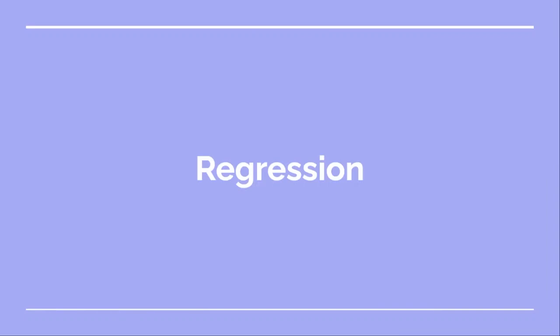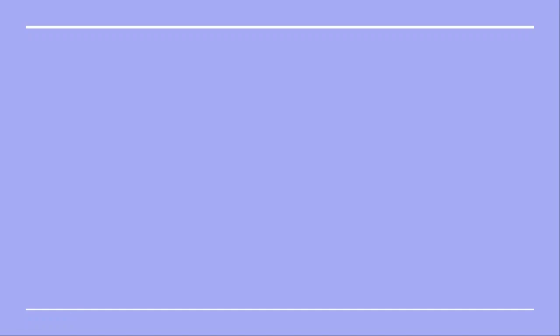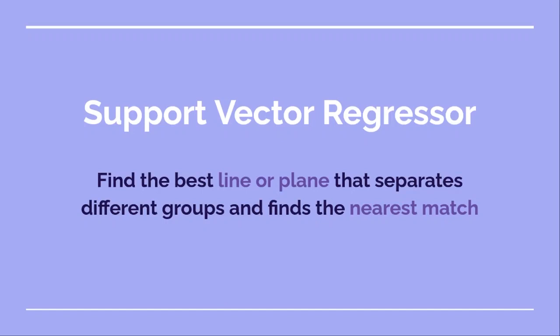One of the most common supervised learning types is regression. We have already seen simple linear regression, and today we are going to learn about another algorithm called Support Vector Regressor, or SVR. It tries to find the best line or plane — called a hyperplane — that separates different groups and finds the nearest match. SVR works much better than simple linear regression when you have many features or when the relationship between inputs and outputs is not linear.